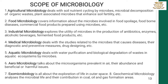Next we are discussing about the scope of microbiology. The first branch is agricultural microbiology, which is a branch of microbiology dealing with plant-associated microbes and plant and animal diseases. The second is food microbiology, which is the study of microorganisms that inhabit, create, or contaminate food. This includes the study of microorganisms causing food spoilage, pathogens, etc.